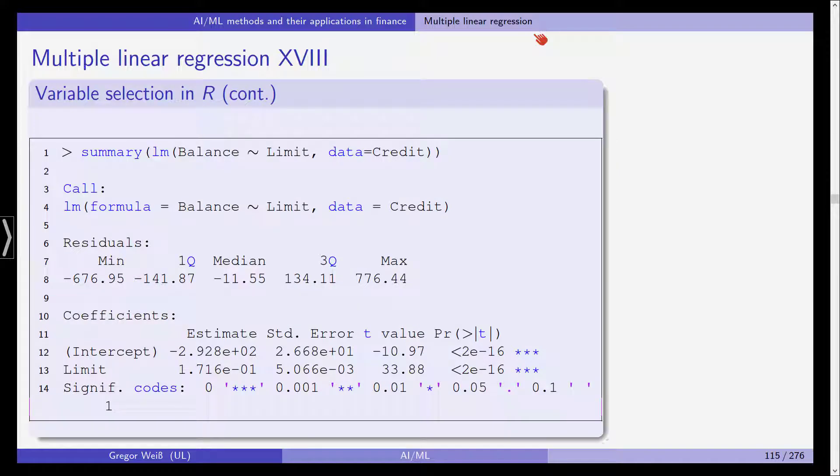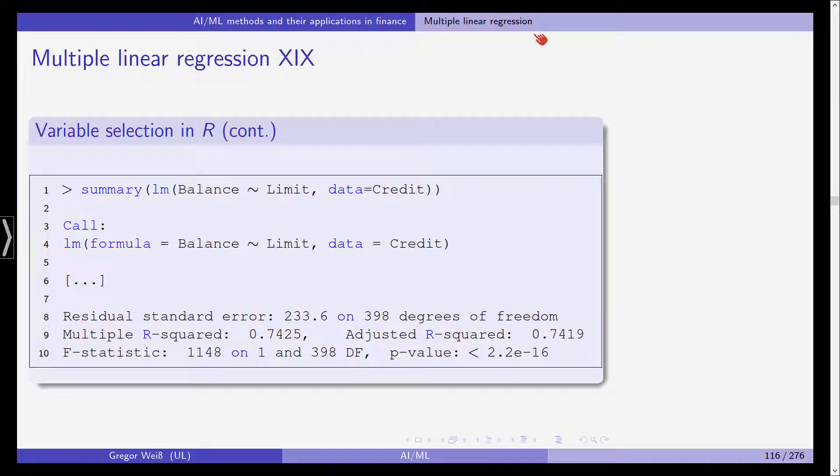Now, let's do this with the credit card limit, and again, the t-value is much much larger in this case. Again however, this variable is statistically significant in our regression. We can also see that the multiple and adjusted, which actually doesn't make sense that it's called a multiple R squared here, it's a simple linear regression, the R squared is 75%, and we can now see that limit, credit card limit, seems to have much more explanatory power when it comes to the balance of the credit card.